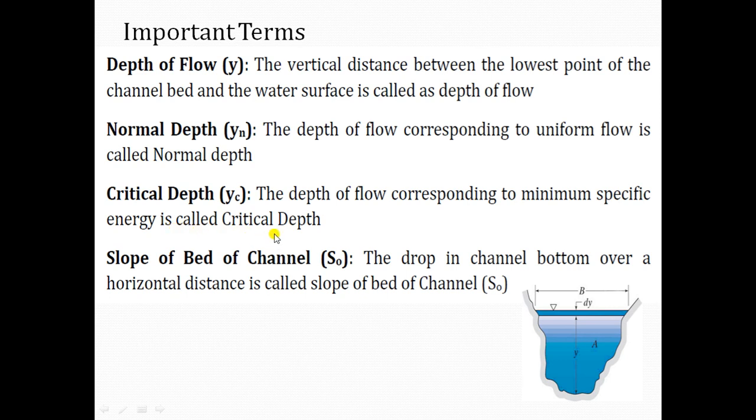In a channel where the flow is in a critical state, that is the Froude number of the flow is 1, the specific energy of such flow is minimum. The depth of flow corresponding to this minimum specific energy is called critical depth.